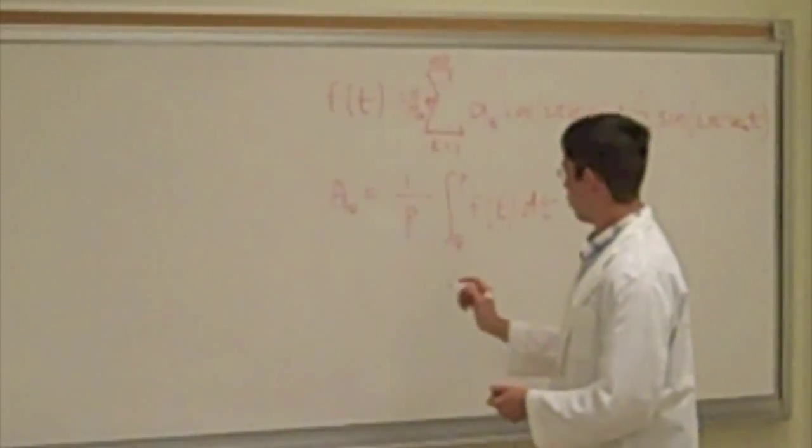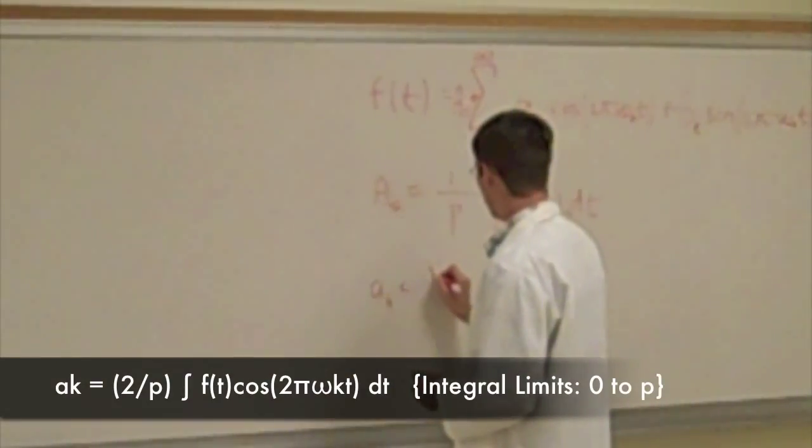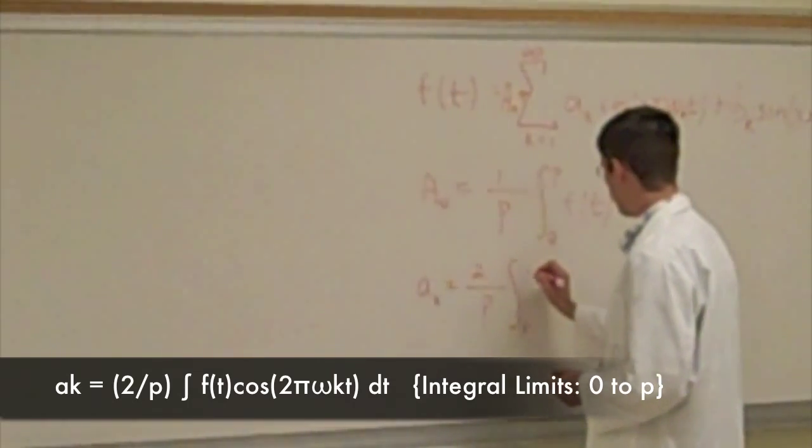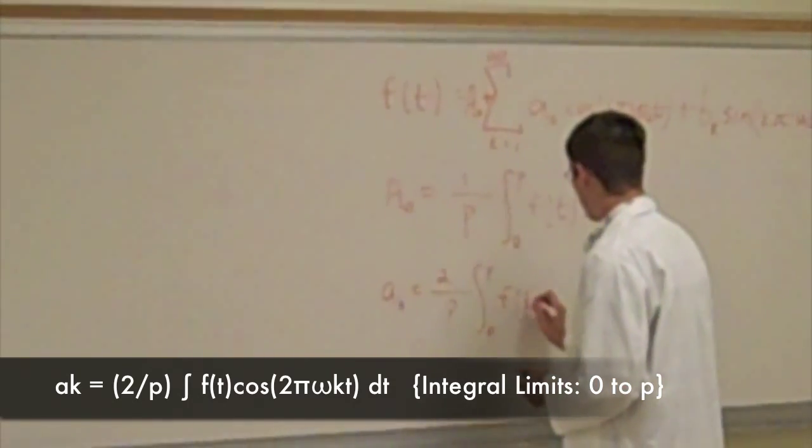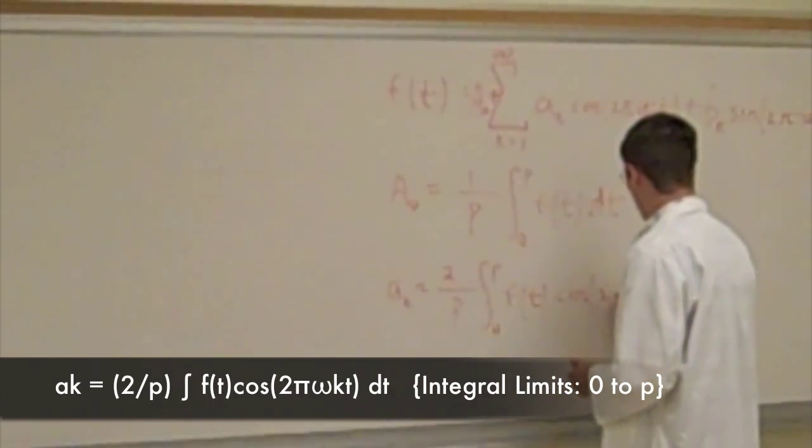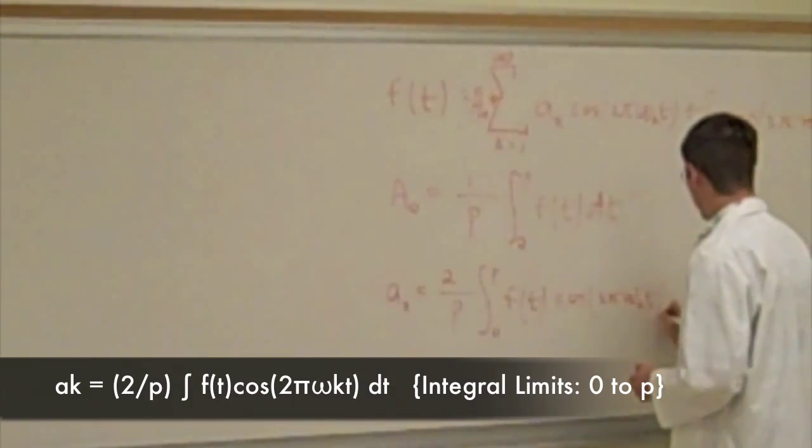A sub k, another constant, is equal to 2 over the period, the integral from 0 to p, the period, of f of t cosine of 2 pi omega sub k t dt.